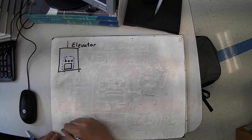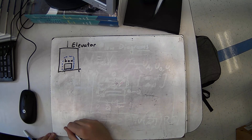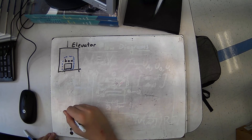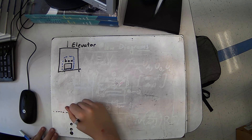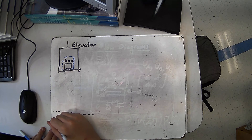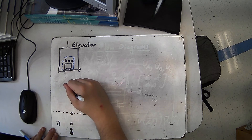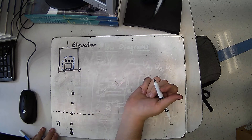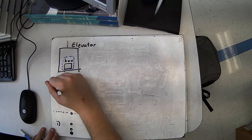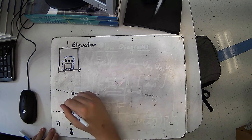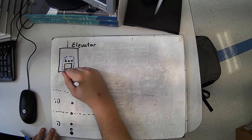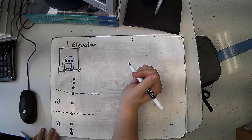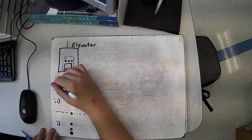Now let's draw a motion map. It starts on the first floor at rest, and then it's moving up and getting faster — this is stage one. From there it moves with a constant speed — stage two. And then from there it slows to a stop — stage three.